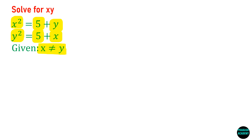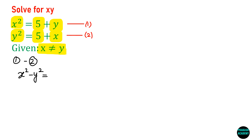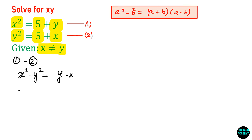Let us assume the first equation is equation 1 and the second is equation 2. Now if you subtract these two equations — equation 1 minus equation 2 — you will have x squared minus y squared. The 5 cancels out, so you will have y minus x on the right side.